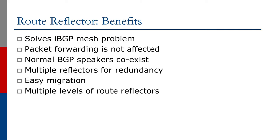The benefits of route reflectors include solving the IBGP full-mesh problem and scaling linearly. You can subdivide the network into as many route reflector clusters as needed, and even create a hierarchy — a route reflector can serve clients that are themselves route reflectors for other clients. Migration is straightforward, multiple reflectors can be introduced for redundancy, clients can speak to route reflectors in different clusters, and packet forwarding is not affected. This is purely about how prefixes are distributed via IBGP.